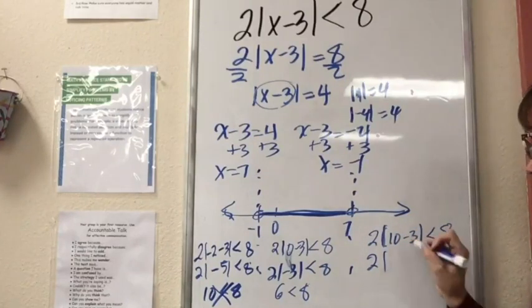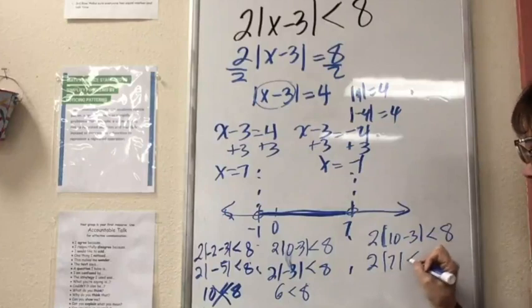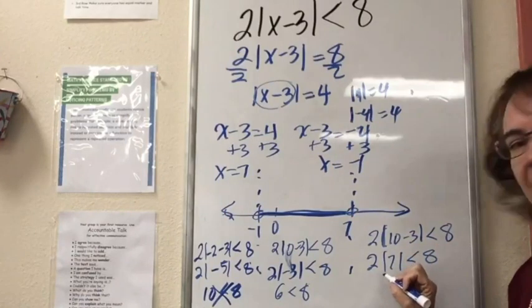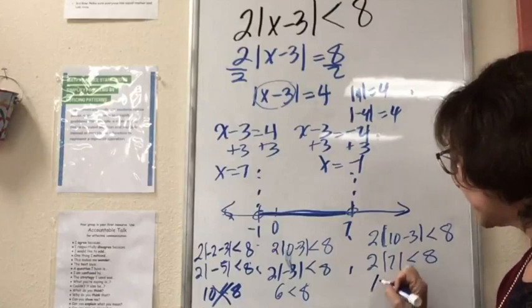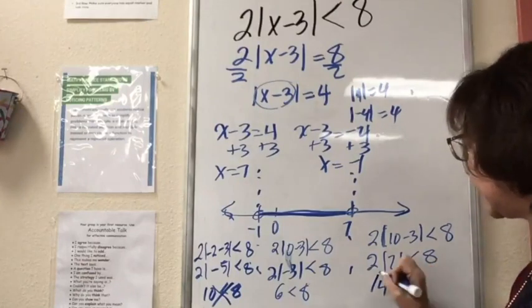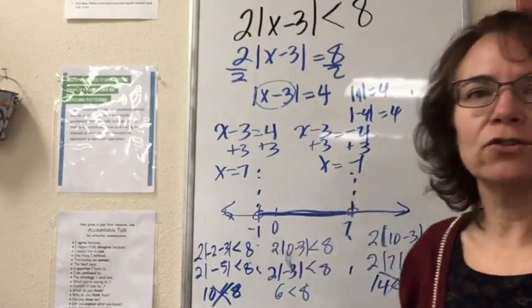2 times |10-3| is 2(7). The absolute value of 7 is 7, so 14 is less than 8. That is not true. So this is my solution set.